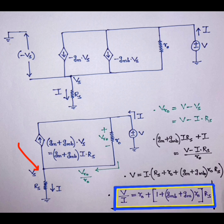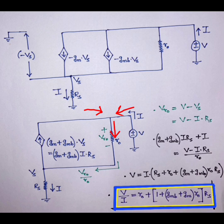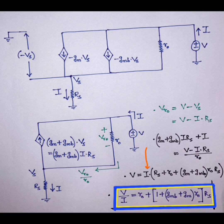There is a voltage drop due to i·Rs, so vs = i·Rs. Between voltage v and vs there is r0. Doing KCL, the current through r0 is (gm + gmb)·i·Rs + i. Taking i to one side and v to the other gives ro plus some factor multiplied by Rs.